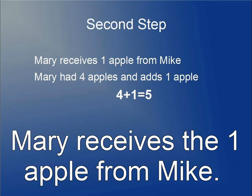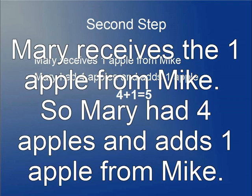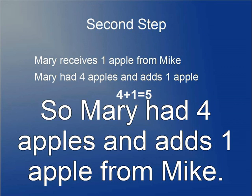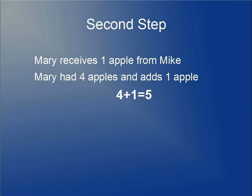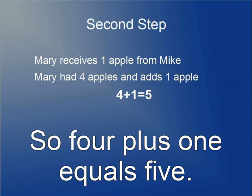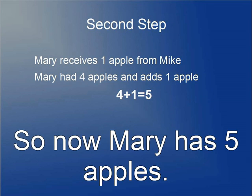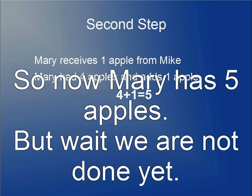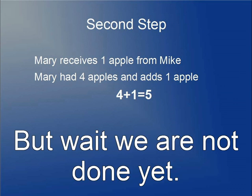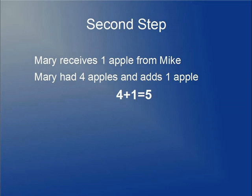Now for our second step: Mary receives one apple from Mike. Mary began with four apples and she adds the one apple she received, so four plus one equals five. Mary now has five apples.